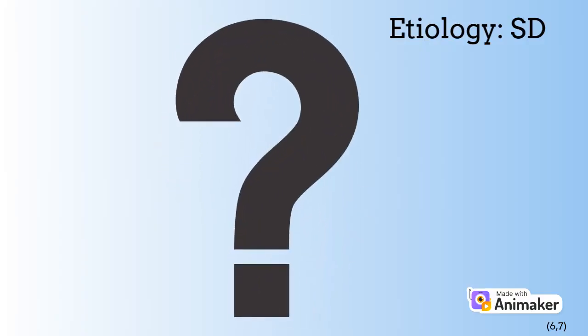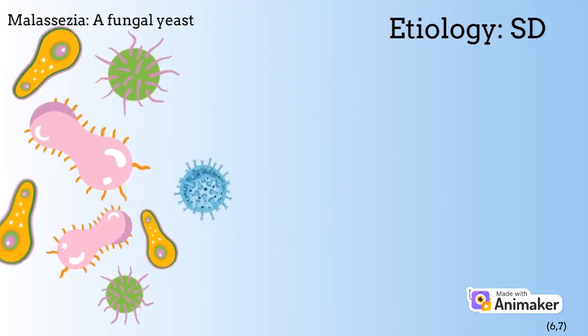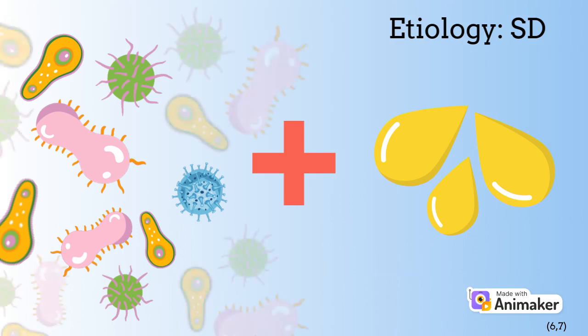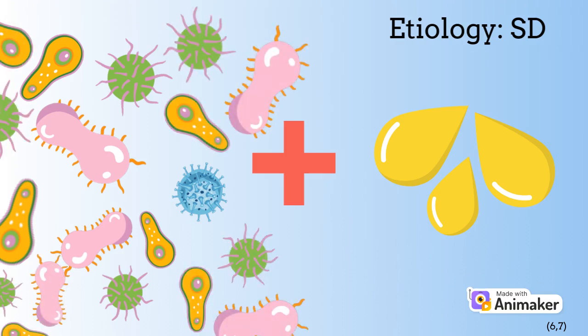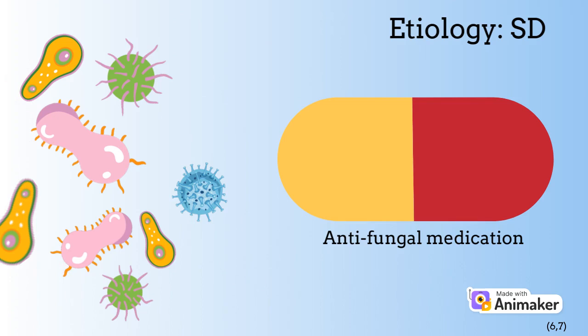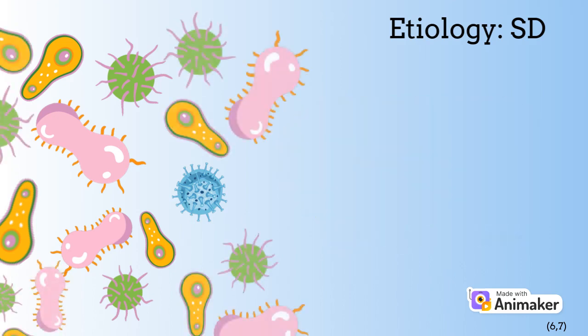The exact cause of SD is still unknown. However, dermatologists believe that malassezia, a fungal yeast naturally present on our skin, and sebum, the oils naturally produced by our skin, play important roles in the development of SD. Perhaps SD symptoms are a reaction to an overgrowth of malassezia yeast on our skin. Dermatologists have found that patients treated with antifungal medication get relief from their SD symptoms, and some even get clear skin. However, when antifungal treatment is stopped and the yeast is allowed to grow again, SD returns.